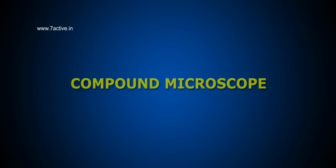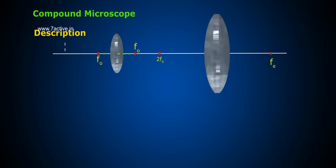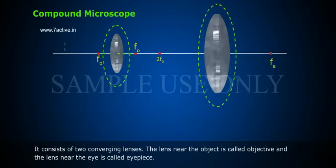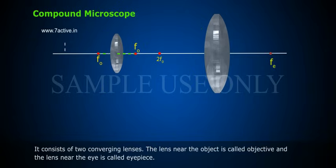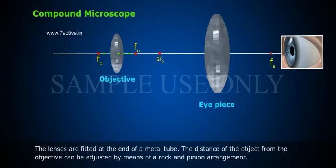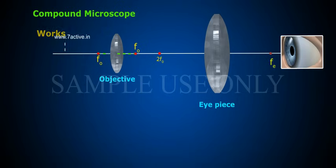Compound microscope description: it consists of two converging lenses. The lens near the object is called the objective and the lens near the eye is called the eyepiece. The lenses are fitted at the end of a metal tube. The distance of the object from the objective can be adjusted by means of a rack and pinion arrangement.